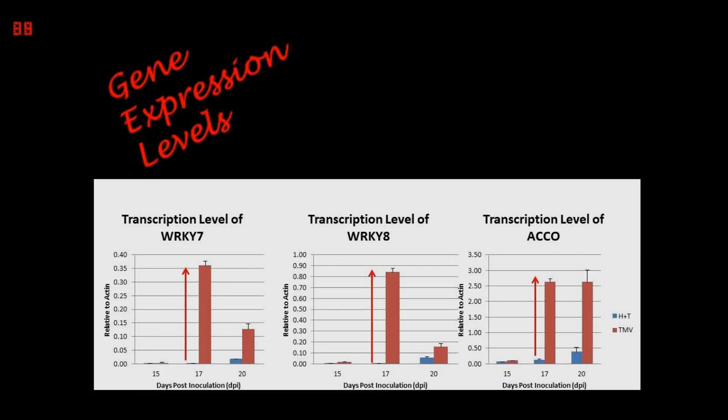The gene expression levels in cross-protected plants, however, remain low and constant, exhibiting the effects of cross-protection. The decline in gene expression levels on 20 DPI was due to stabilization of gene expression levels after peaking at around 17 DPI. As positive regulators are expressed more actively in the early stages of infection while negative regulators are expressed more actively in the later stages, the decline in WRKY-8 is much greater than that of WRKY-7.